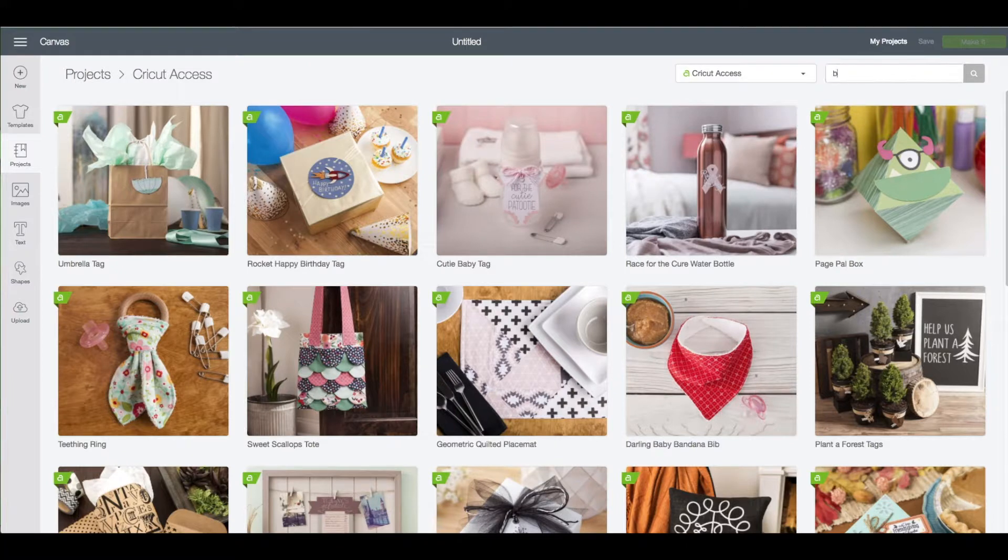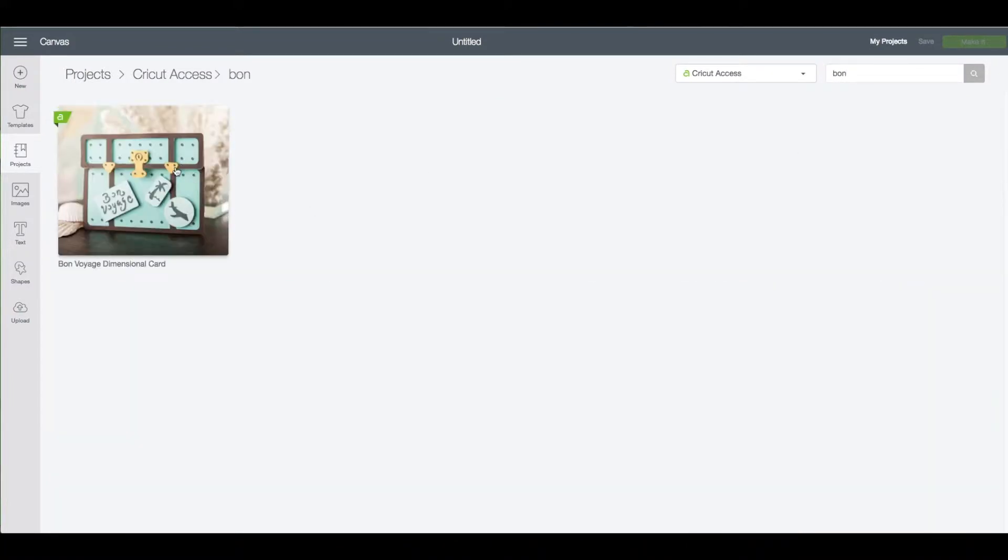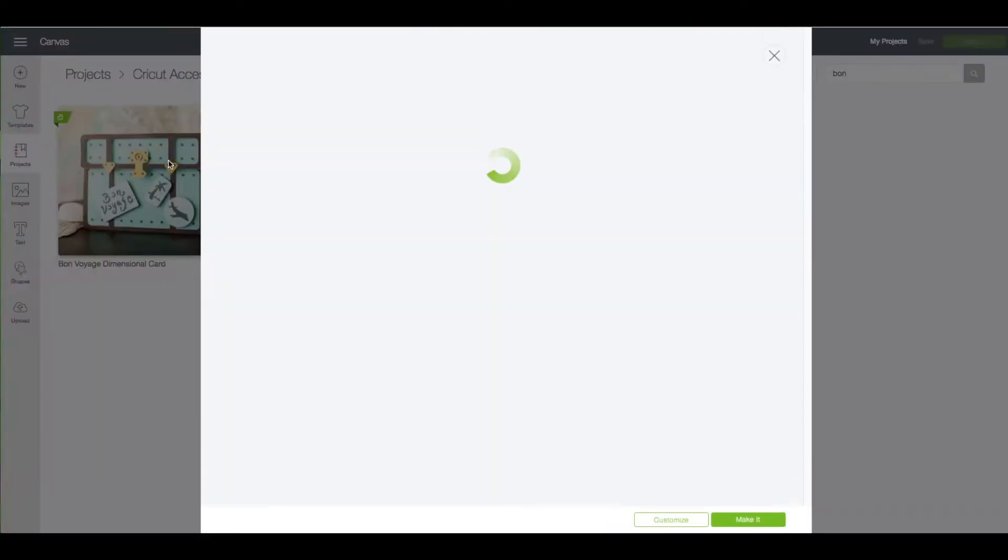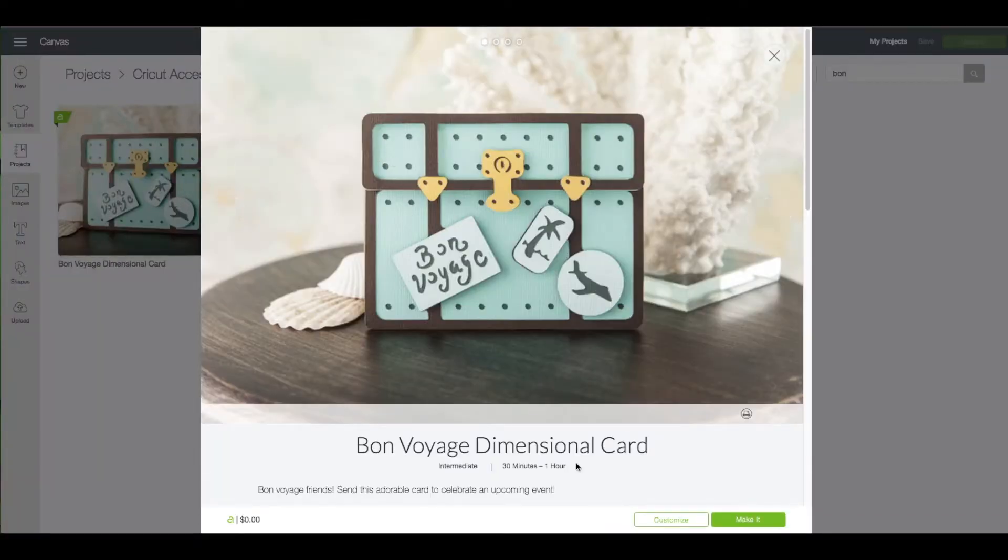In the search box in the upper right hand corner type in the word Bon, B-O-N. Click on enter. That brings up the Bon Voyage card. Click on that. This brings up the preview window. Bottom right, click on customize.